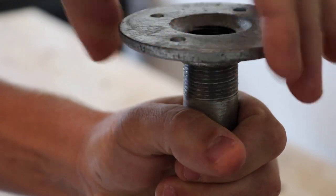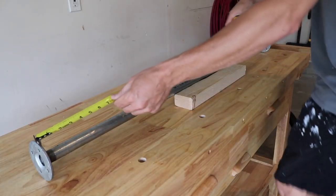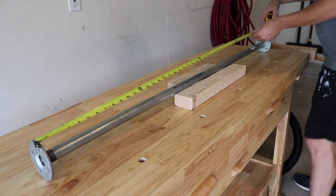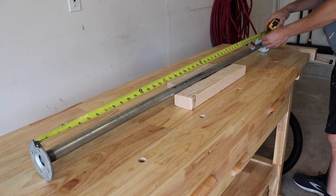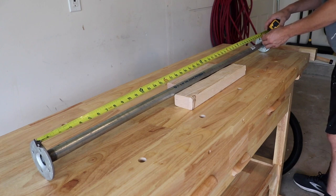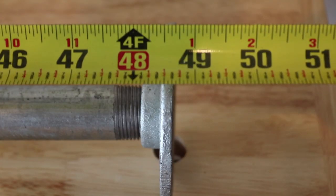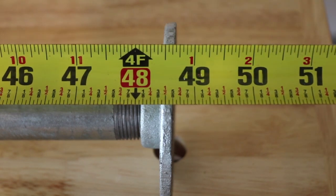And then the next thing you'll do is you'll get a measurement from end to end on the flanges there. And so depending on how tight you got the flange, your measurement may be different. Mine was 48 and 5/8ths.